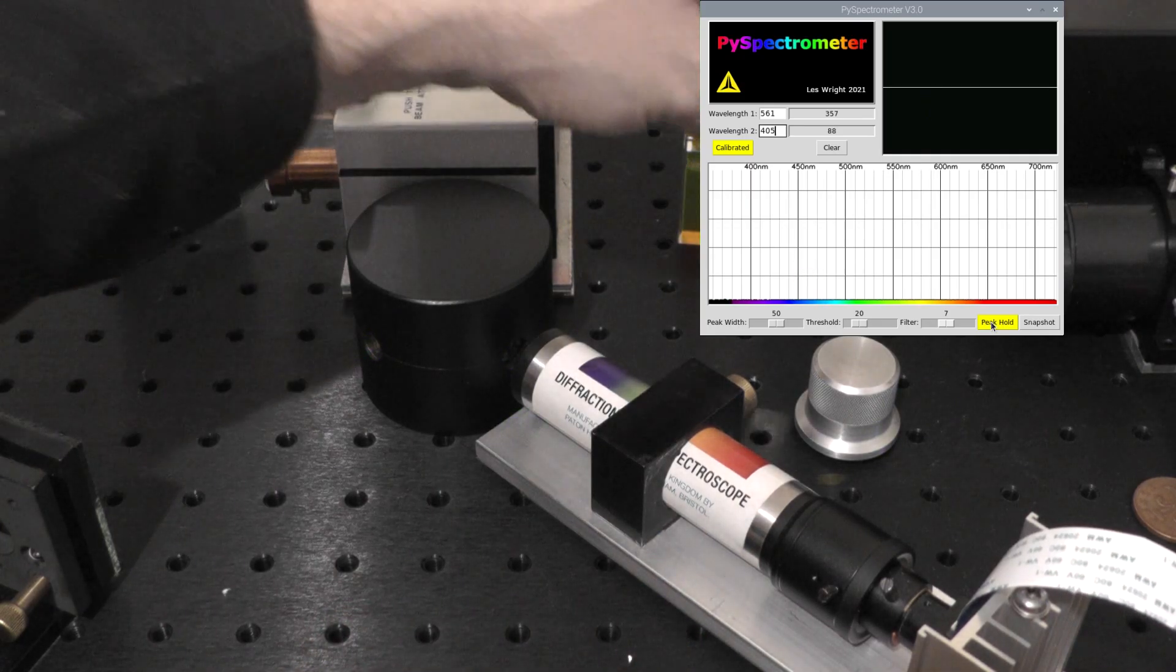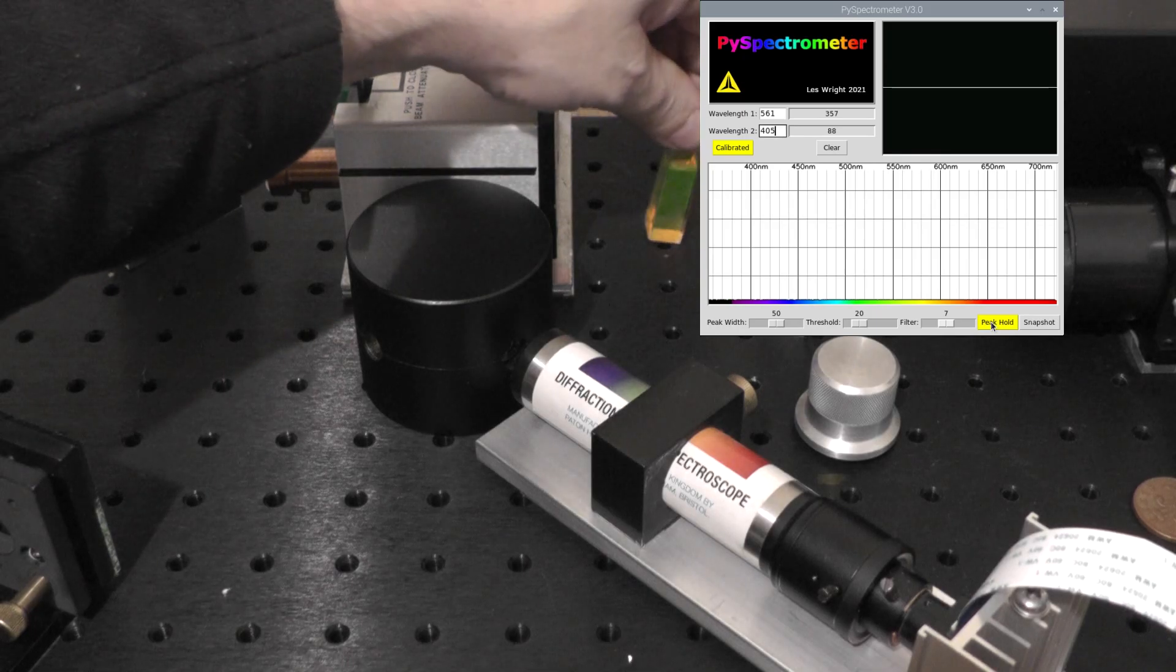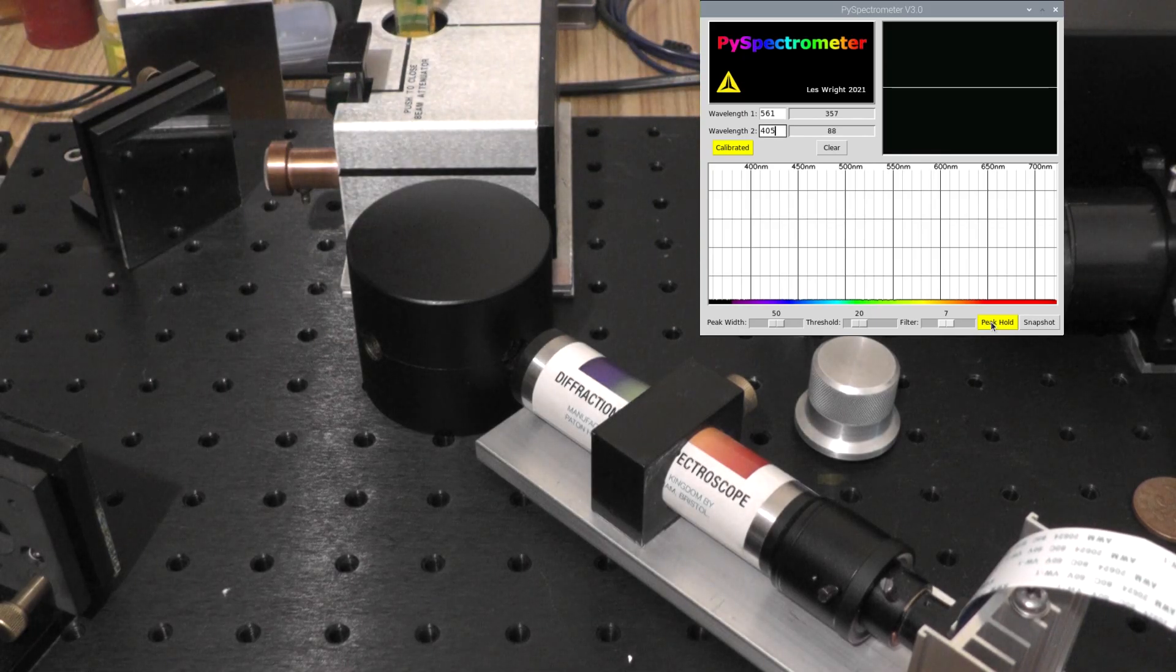While we're at it, we'll just swap out the dyes for Rhodamine 6G, which is tunable from green to yellow, and we'll just give that a quick tune as well.